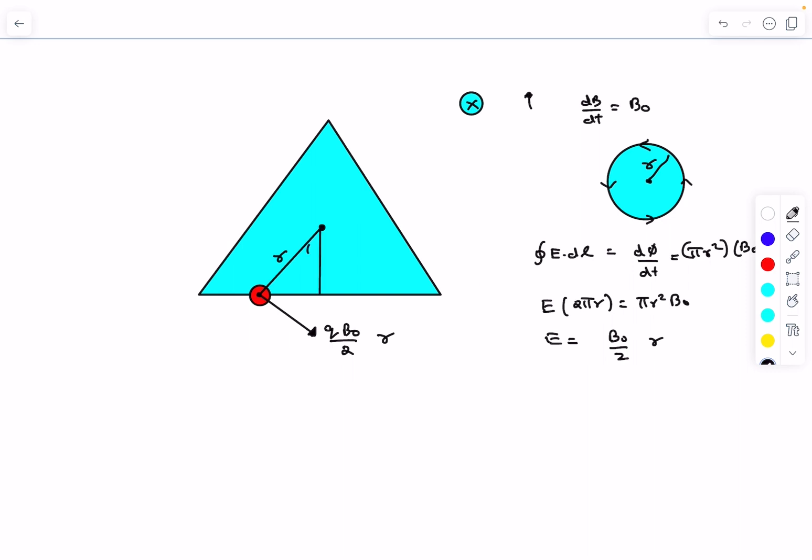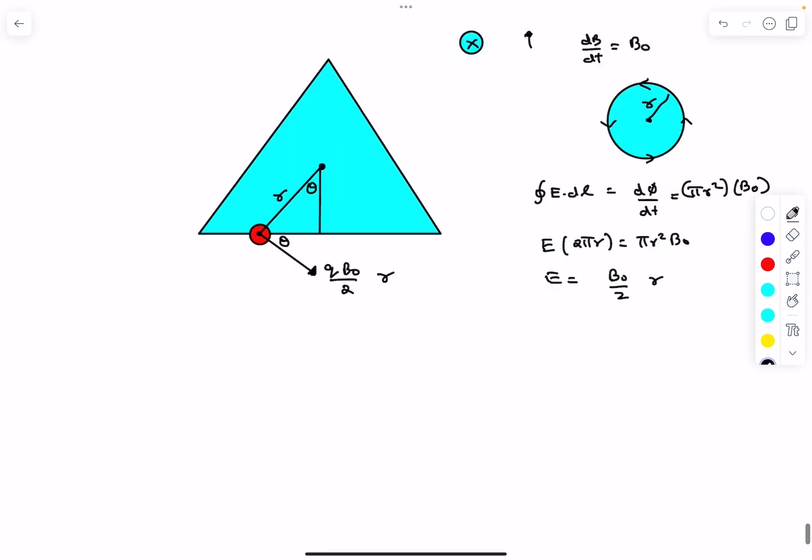The result comes out to be pretty interesting. So if I assume this angle is θ, this will be 90 minus θ, and this angle is going to be θ as well.